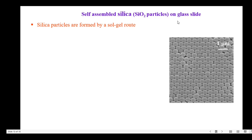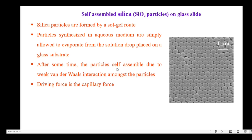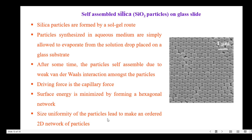The next one is SiO2 inorganic particles — that is, self-assembly of silica particles on a glass layer. Silica particles are formed by a sol-gel route. The particles are synthesized in aqueous medium, and the solution is taken on a glass substrate and allowed to evaporate. After evaporation, the particles self-assemble due to weak van der Waals interactions. The capillary force acts as the driving force and the surface energy is minimized by forming a hexagonal network. The size uniformity of the particles leads to an ordered two-dimensional network, and this is the electron microscopic image of the SiO2 particles on glass slide.